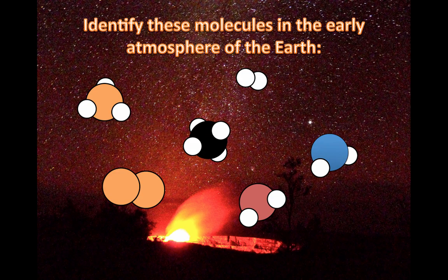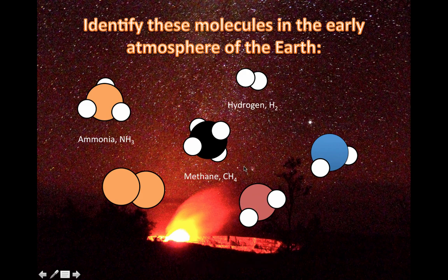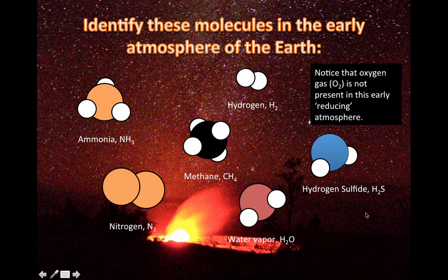Let's start with these particular molecules in early Earth's atmosphere. You'll notice that something very important is missing. If you can recognize the number of bonds that most of these atoms actually make, you can probably recognize that that's carbon with four hydrogen atoms attached — so that's methane. The molecules present were ammonia, hydrogen, methane, nitrogen, water vapor, and hydrogen sulfide.